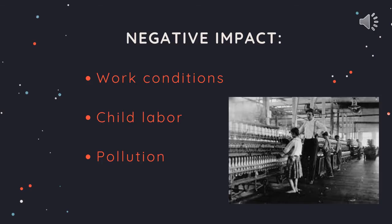The Industrial Revolution is one of the most significant events in human history and had a profound effect on many nations throughout the world. While it first began in Britain in the 18th century, its impact can still be seen in our lives today. As an event, the Industrial Revolution had both positive and negative impacts for our society.